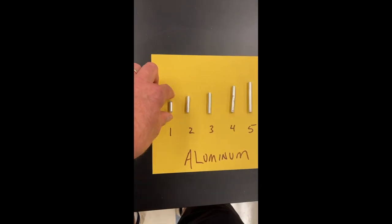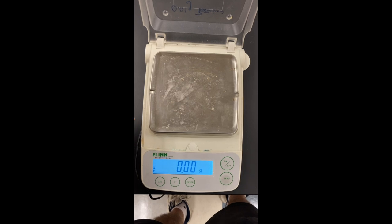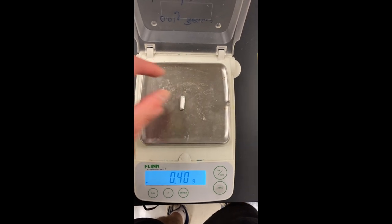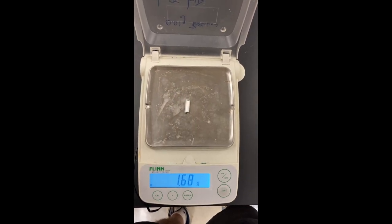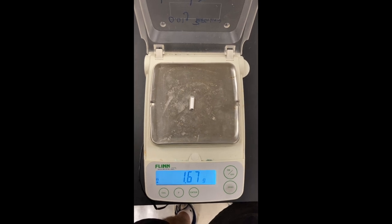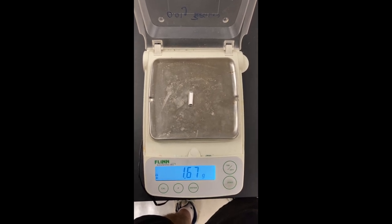I'm going to take piece number one, make sure my scale is at zero, and we'll weigh it. I need you to write down that piece number one has a mass of 1.67 grams in your data table.